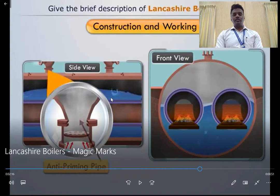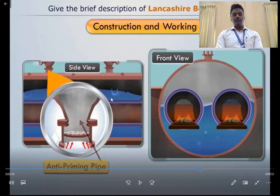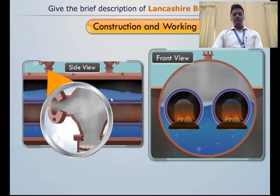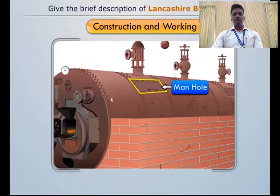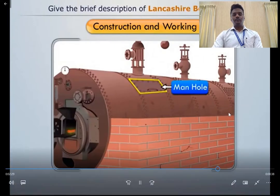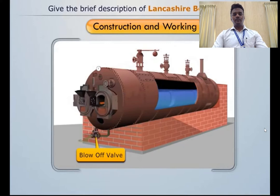Once the boiler is heated adequately, water converts into steam by absorbing heat from the flue gases. This steam is stored at the upper portion of the boiler shell, where an anti-priming pipe separates water from steam. The steam may contain water molecules — if wet steam is supplied to run a steam turbine, it creates problems like corrosion and erosion of turbine blades. To prevent entry of water molecules and supply good quality steam, we make use of an anti-priming pipe. The steam stop valve then receives the dry steam. A manhole is provided at the top and bottom of the shell for cleaning. A blow-off valve removes settled mud and empties the boiler.